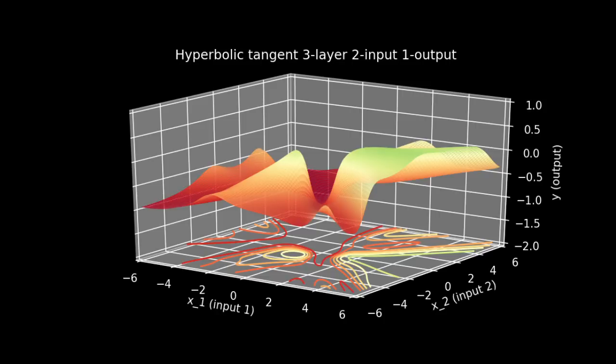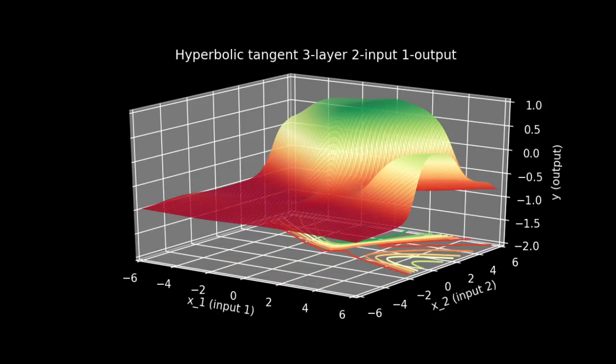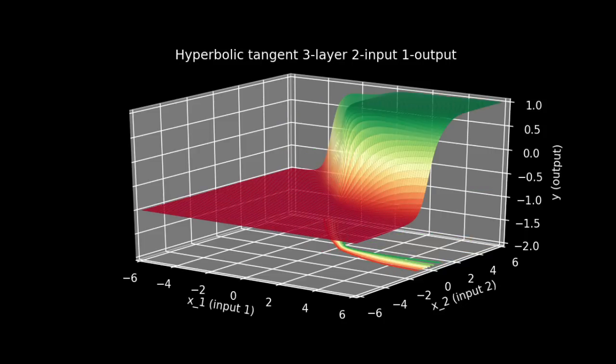However, aside from these two limitations, the variety of functions that this neural network can produce is a little mind-boggling.